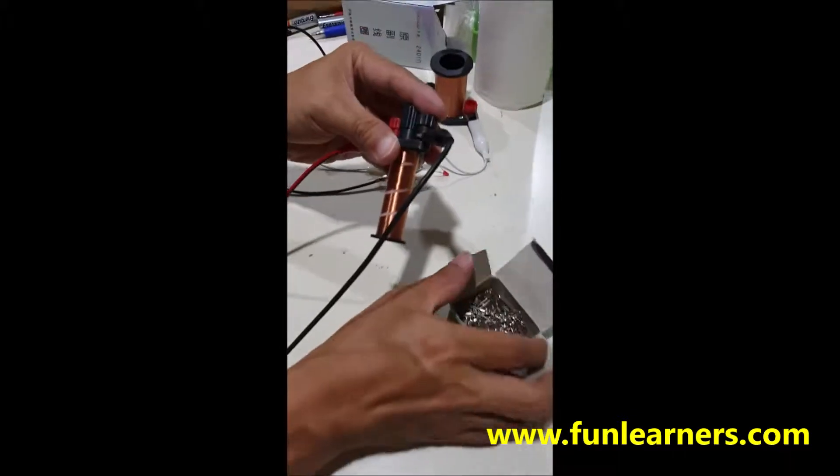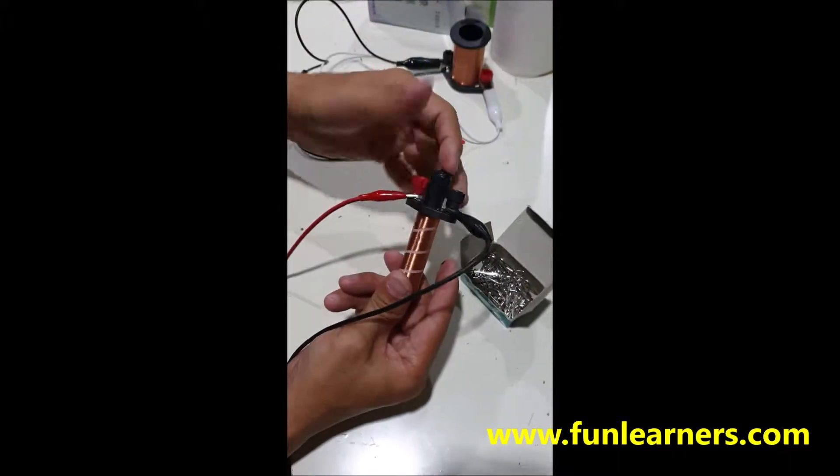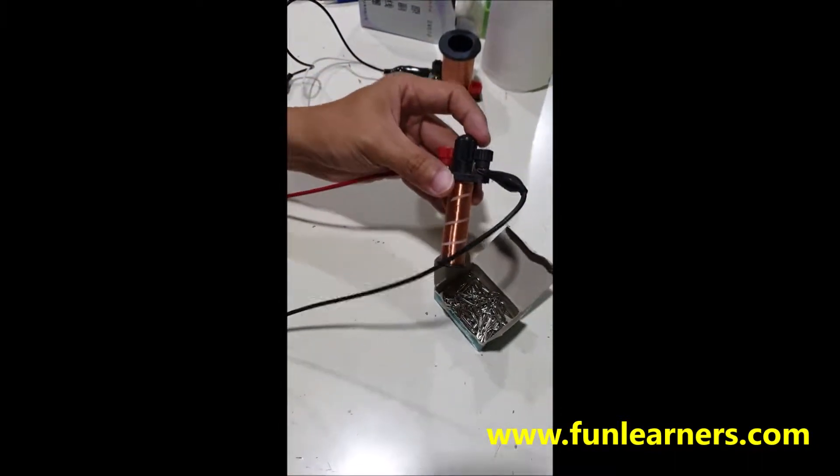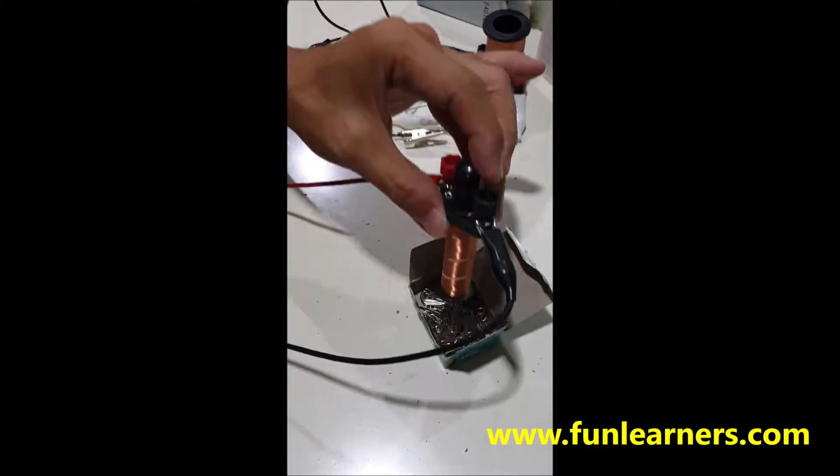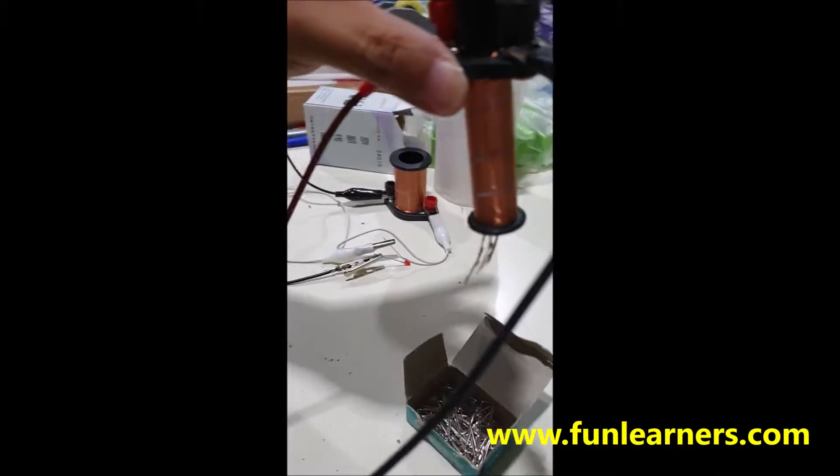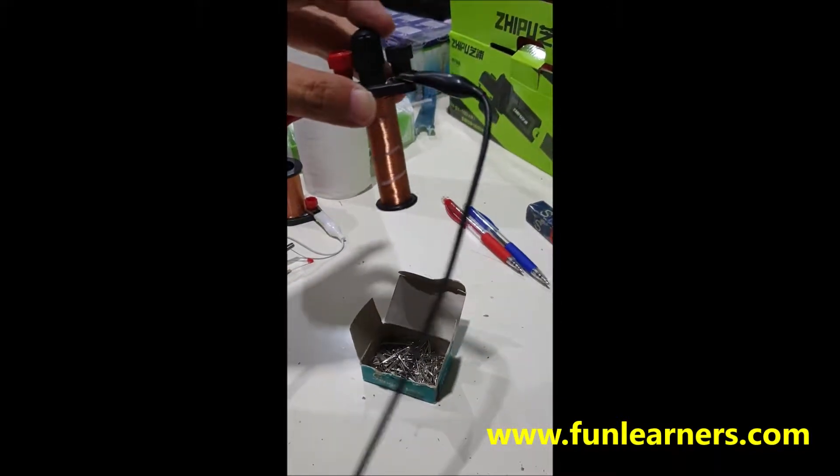This is basically a solenoid with an iron core at the center, so this can act as an electromagnet. Now we connect it to DC, switch off DC. There will be residual magnetic force, but after that, no more.